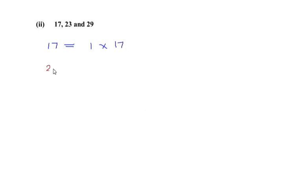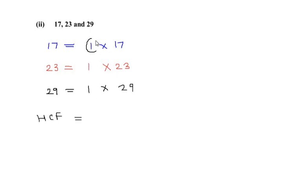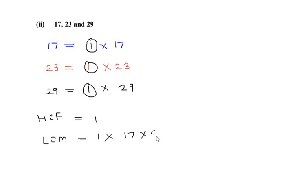For 23 the factors are 1 and 23, and for 29 the factors are 1 and 29. Finding the HCF: the number 1 is common in all three given numbers, so HCF = 1. For the LCM, we take HCF multiplied by the non-circled numbers, which are 17 × 23 × 29. Multiplying all three gives LCM = 11,339.